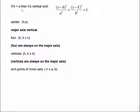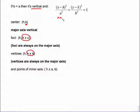Now let's look at this formula when b is greater than a. If b is greater than a, we are looking at a vertical ellipse, and we find the foci and vertices by tacking onto the vertical part of the center. The center is still h, k. The major axis is vertical because b was greater than a. To find the foci, add and subtract c from the vertical part of the center. For vertices, b gets tacked onto k. A is underneath x, making it a horizontal distance, while b gets tacked onto y as a vertical distance.